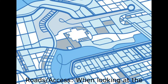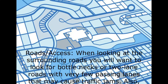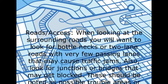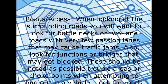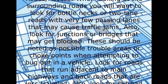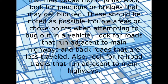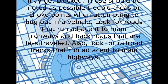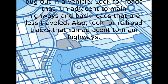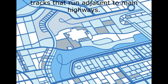When looking at the surrounding roads, you'll want to look for bottlenecks or two-lane roads with very few passing lanes that may cause traffic jams. Also look for junctions or bridges that may get blocked — these should be noted as possible trouble areas or choke points when attempting to bug out in a vehicle. Look for roads that run adjacent to main highways and back roads that are less traveled. Also look for railroad tracks that run adjacent to main highways.